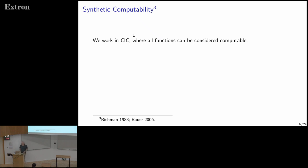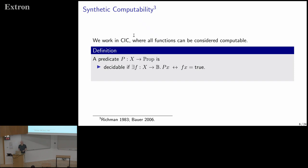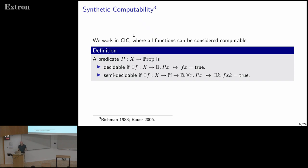We work in the calculus of inductive constructions (CIC), the type theory underlying the Coq proof assistant. This is a constructive type theory where all functions can be considered computable. A predicate on a type X is decidable if there is a function f: X → Bool such that p(x) holds iff f(x) = true. A predicate is semi-decidable if there is a step-indexed function f: X → ℕ → Bool such that p(x) holds iff there exists k with f(x)(k) = true.